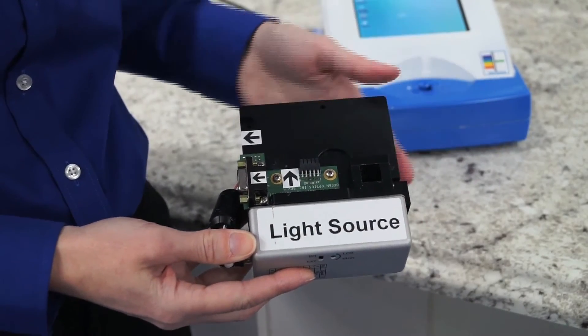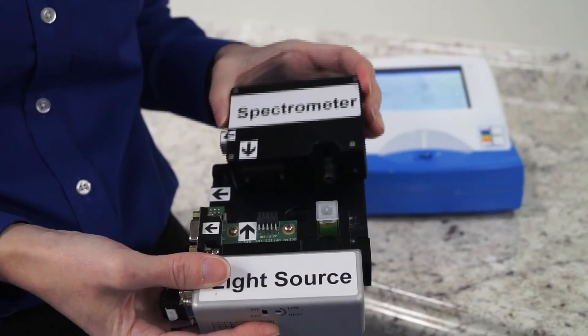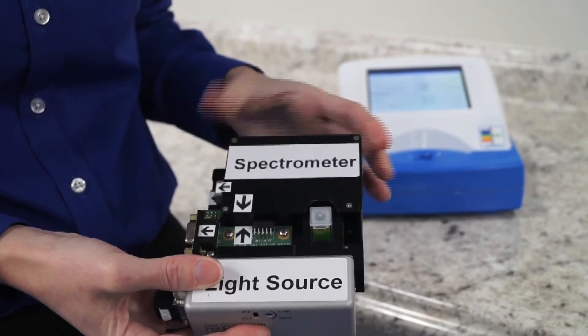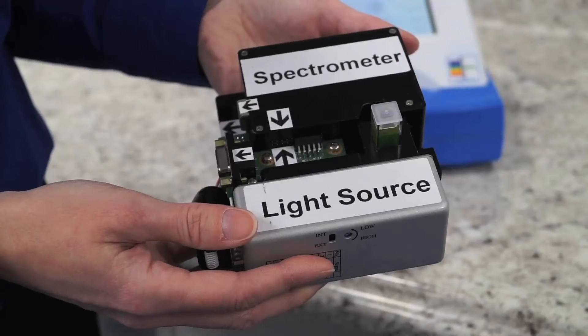For example, we might use direct coupling of light through the cuvette to the spectrometer. This makes the subassembly more robust and improves light throughput.